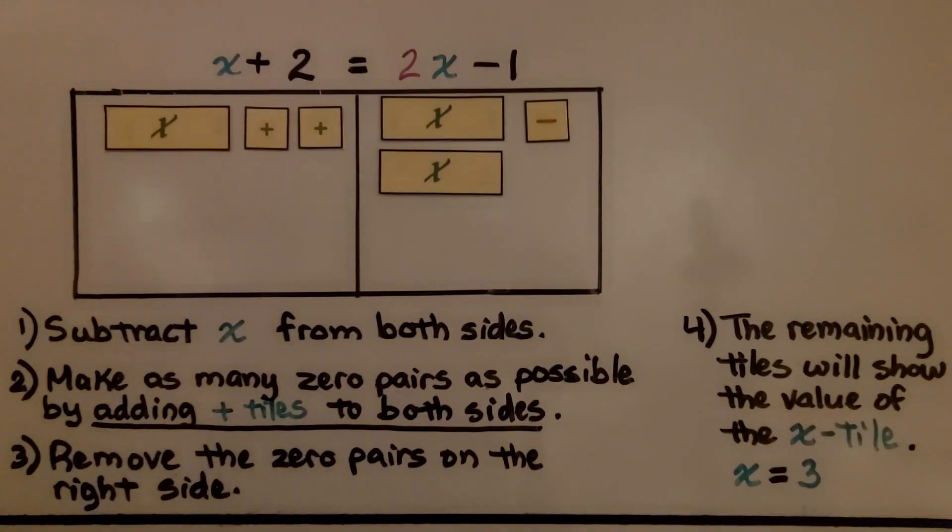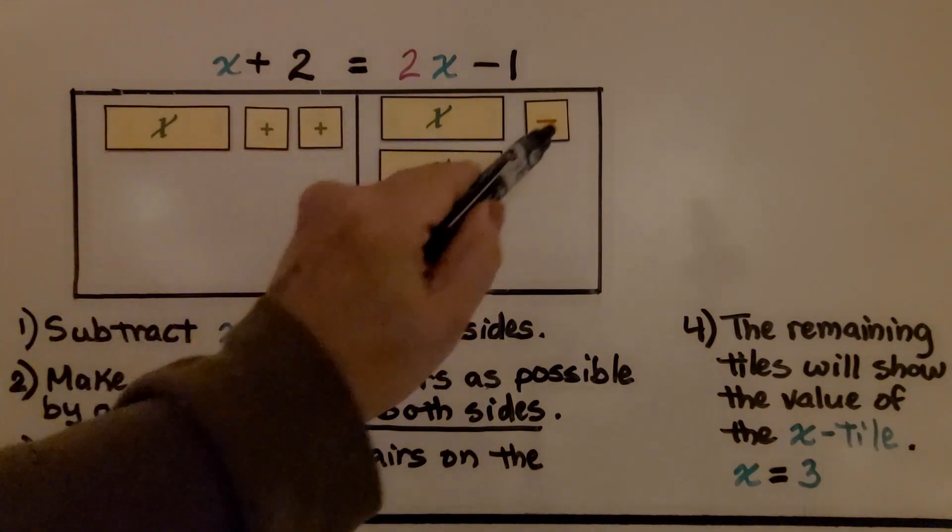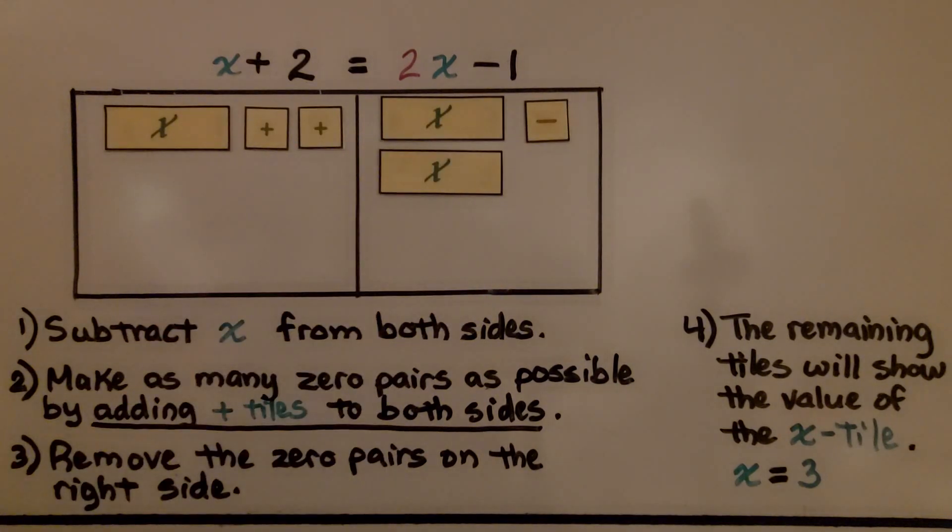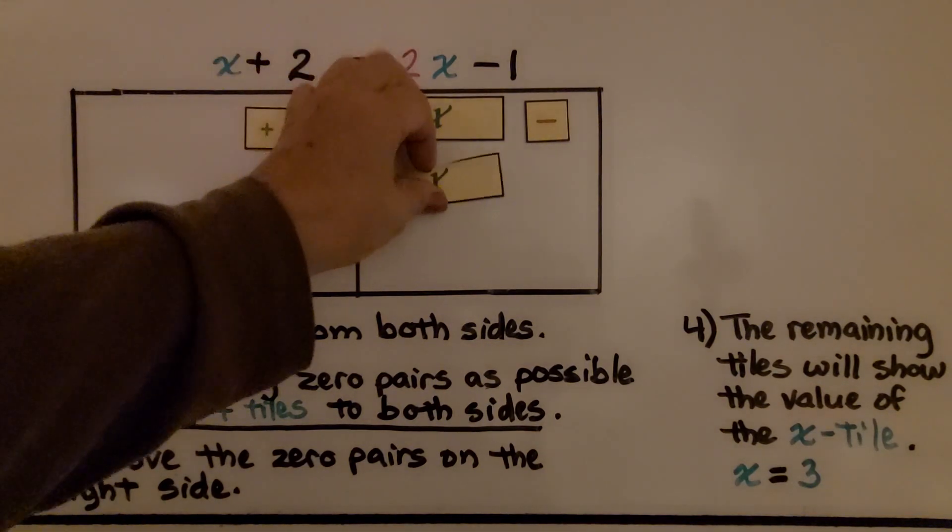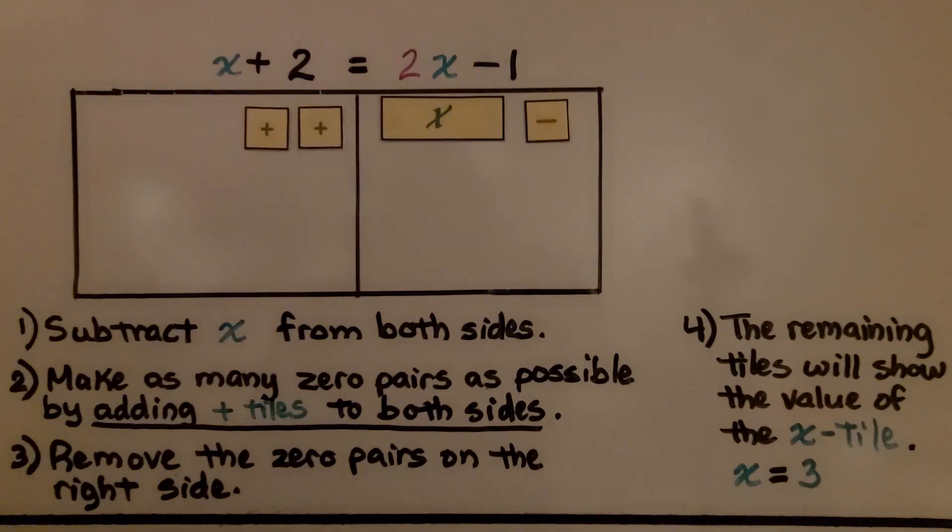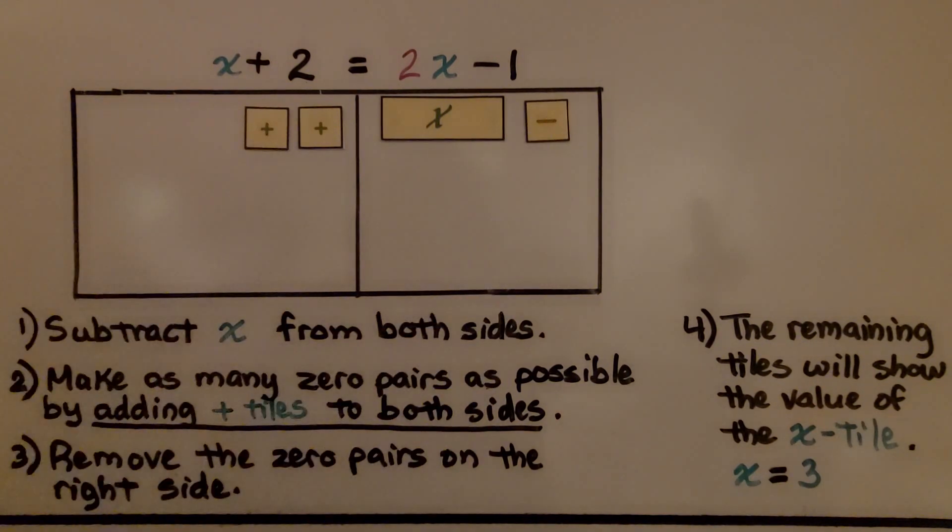Here we have x plus 2 equals 2x minus 1. We've modeled x plus 2 on this side and 2x minus 1 on the right side. We begin by subtracting x from both sides. We're going to take away an x. We're going to take away an x. Now we have a minus 1 on this side and a plus 2 on this side.